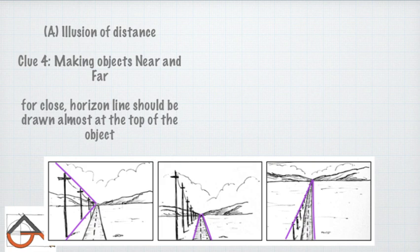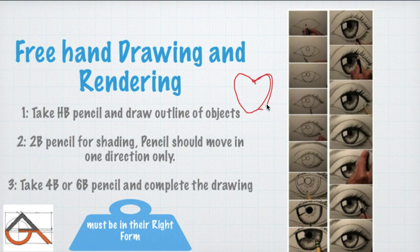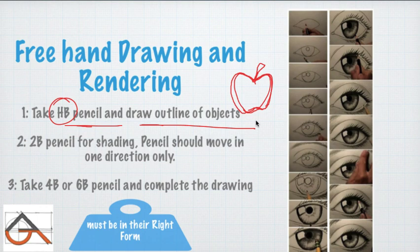For freehand drawing and rendering: first, take an HB pencil or H pencil to draw the outline of the object. For example, if you want to make an apple, use the HB pencil to draw the outline. When you think the outline is right, it is easy to erase and adjust at this stage. The guidelines you draw are like a framework — like a face with guidelines showing where the eyes should go.